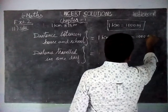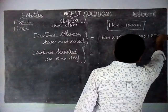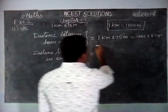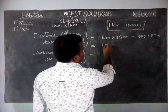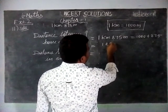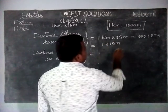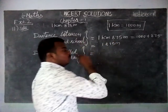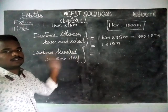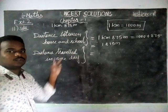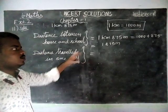1000 plus 875 is equal to 1875 m. This is 1 way. The student is walking 2 times — from home to school and school to home.